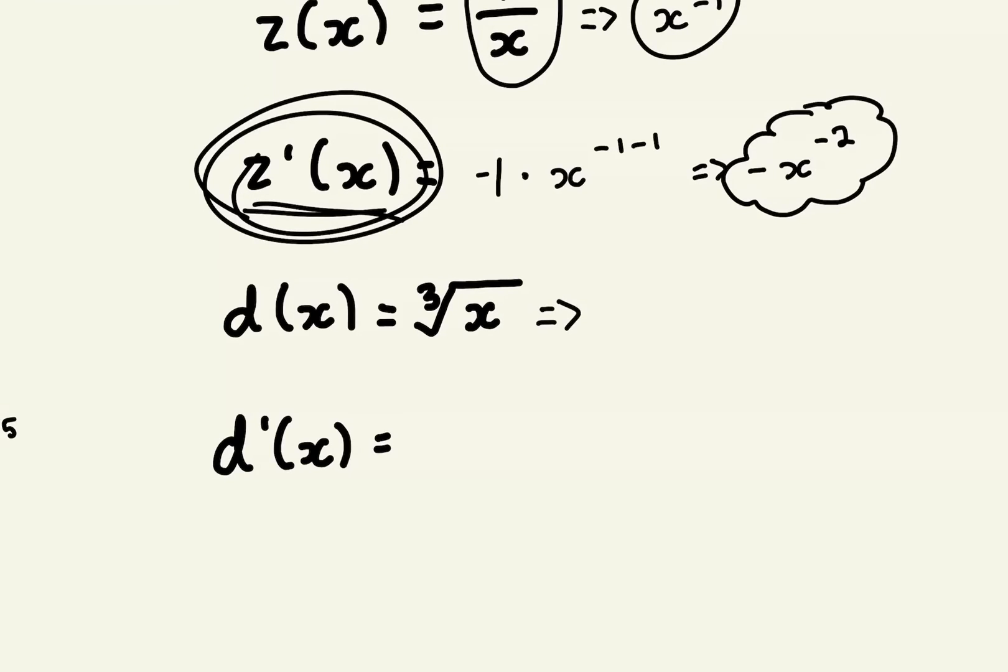Again, we can rewrite this as x to the power of 1/3, and using this we can then apply the power rule. So the derivative will be 1/3 times x to the 1/3 minus 1, or 3/3, and you can simplify that as 1/3 x to the power of negative 2/3.